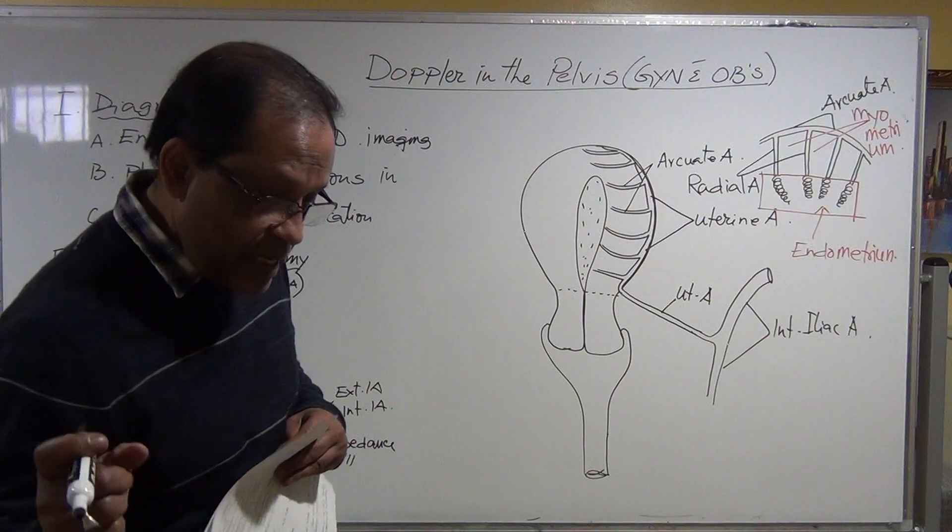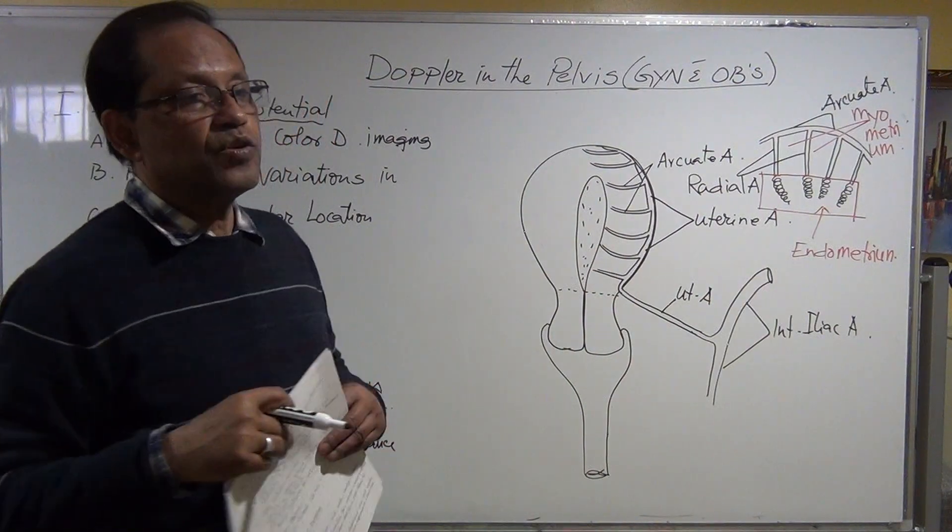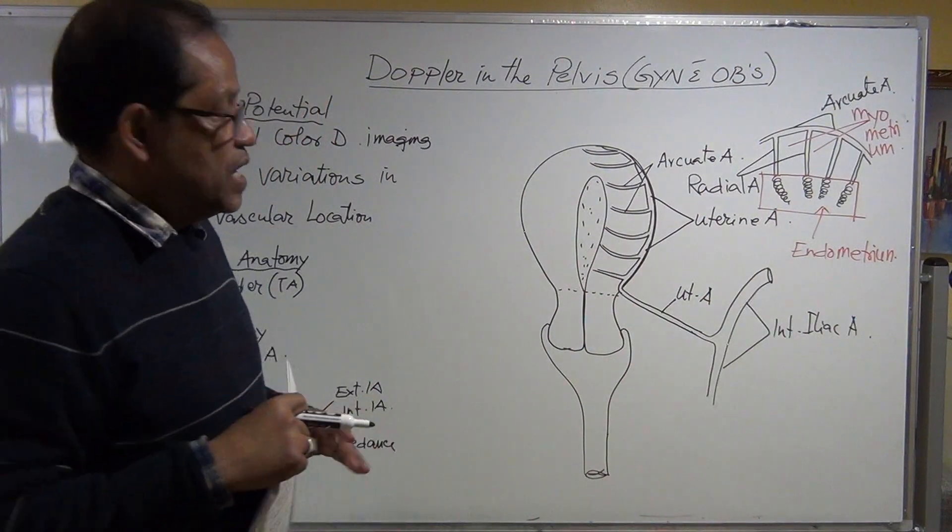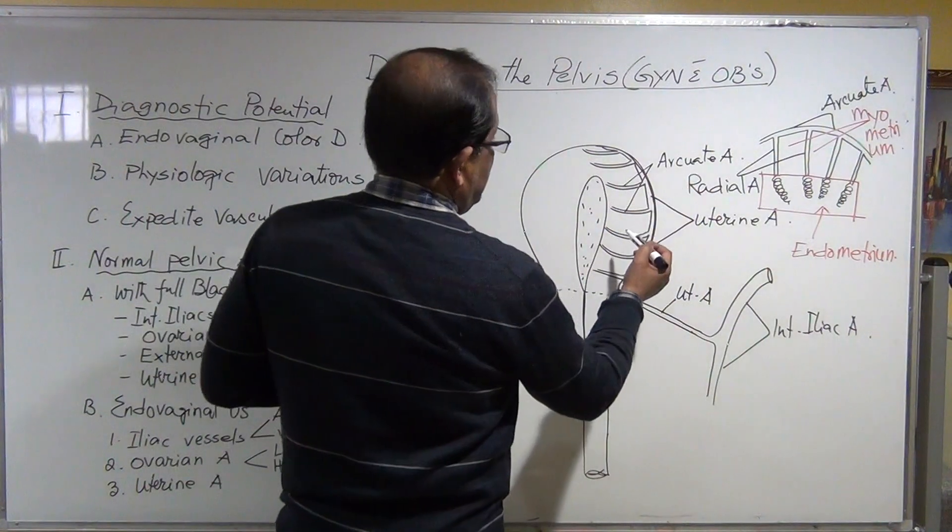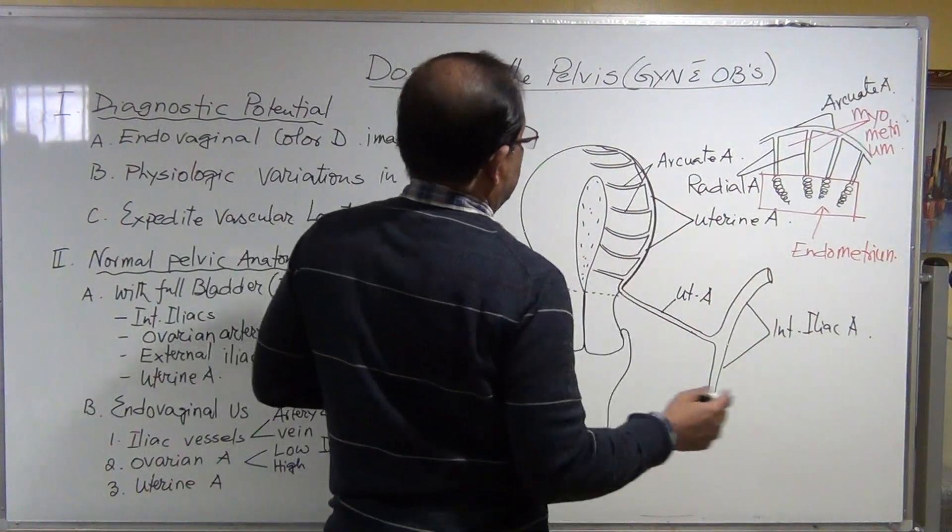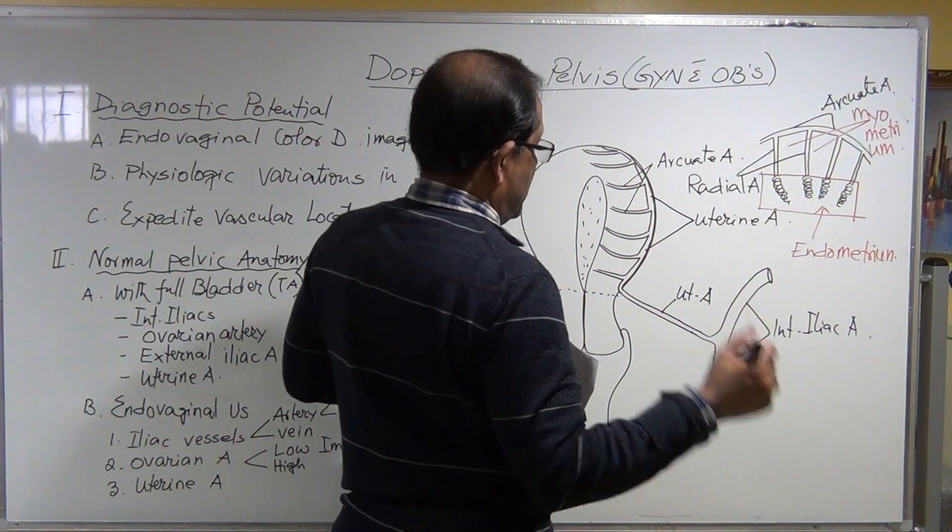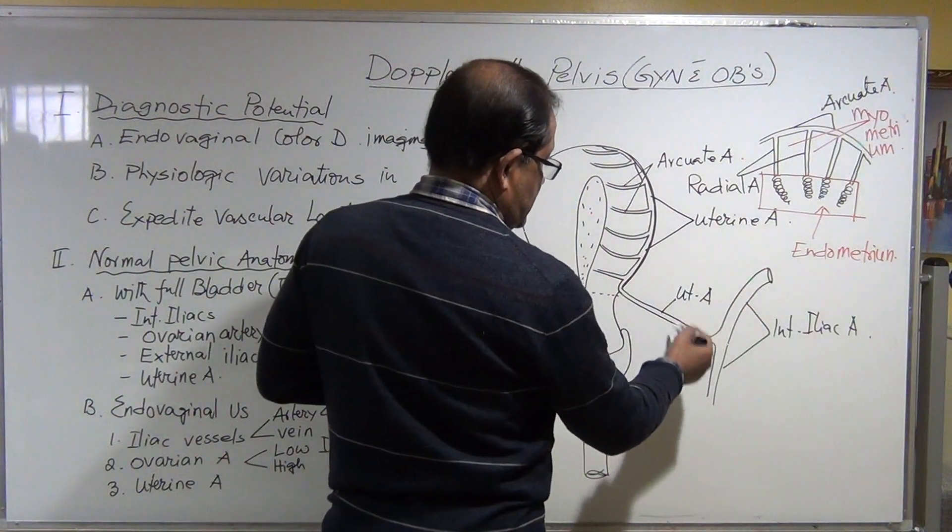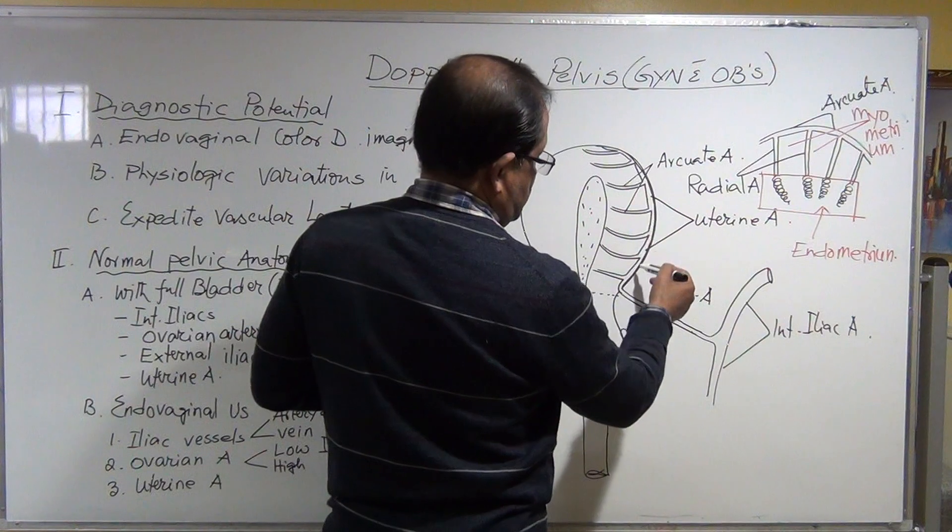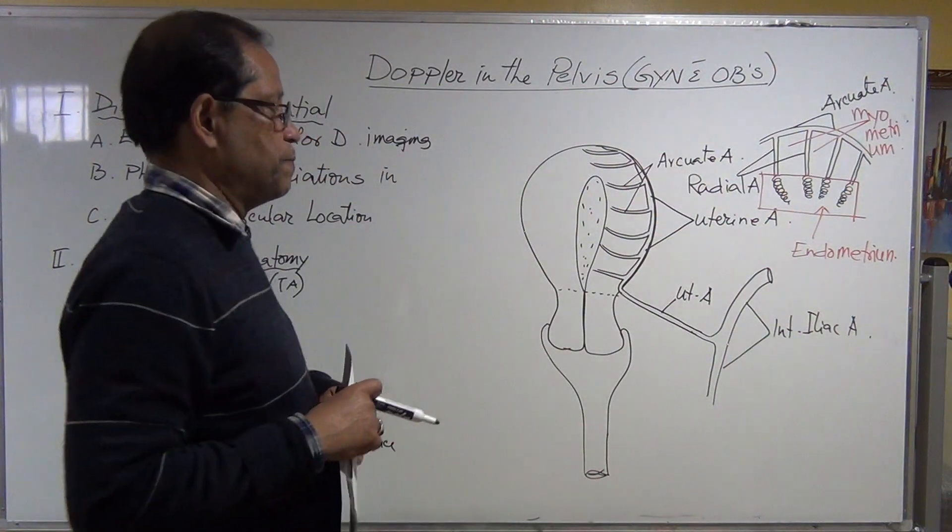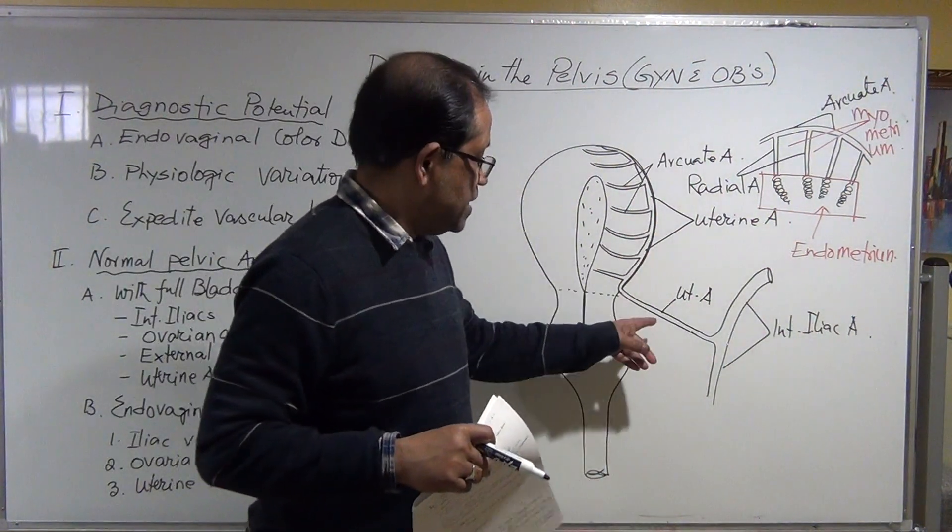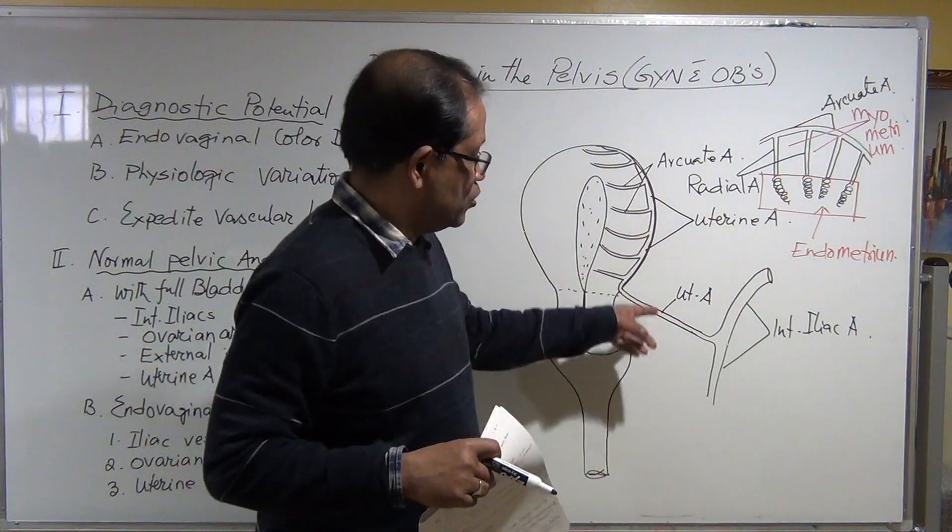It has to be transvaginal ultrasonography to see the arcuate artery. Even the radial artery, you have to use transvaginal approach. But uterine artery, this uterine artery and this uterine artery, you can identify and do the Doppler in transabdominal too.